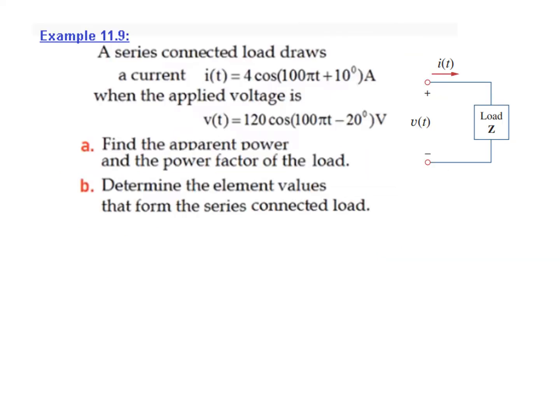Now let's solve Example 11.9. A series-connected load has resistance and inductance, or resistance and capacitance. The current in the circuit and the applied voltage are given. We have to find the apparent power and the power factor of the load, and also determine the element values — the resistance, capacitance, and inductance if present.